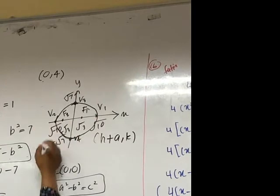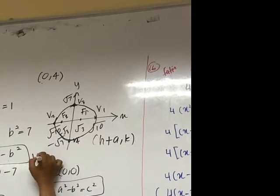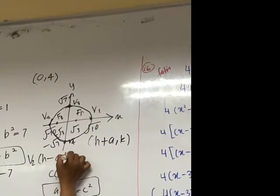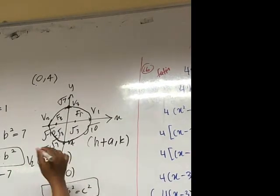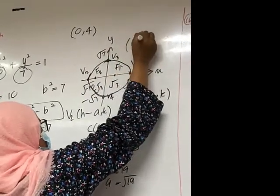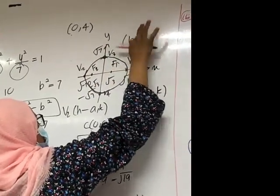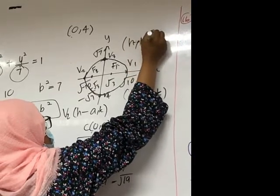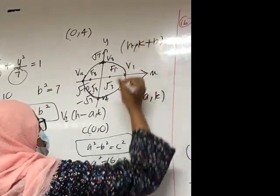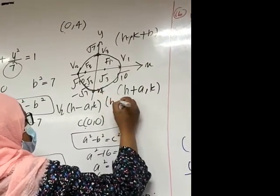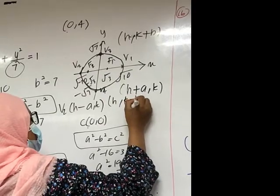For V2, (h - A, k). For V3, (h, k + B). For V4, (h, k - B).